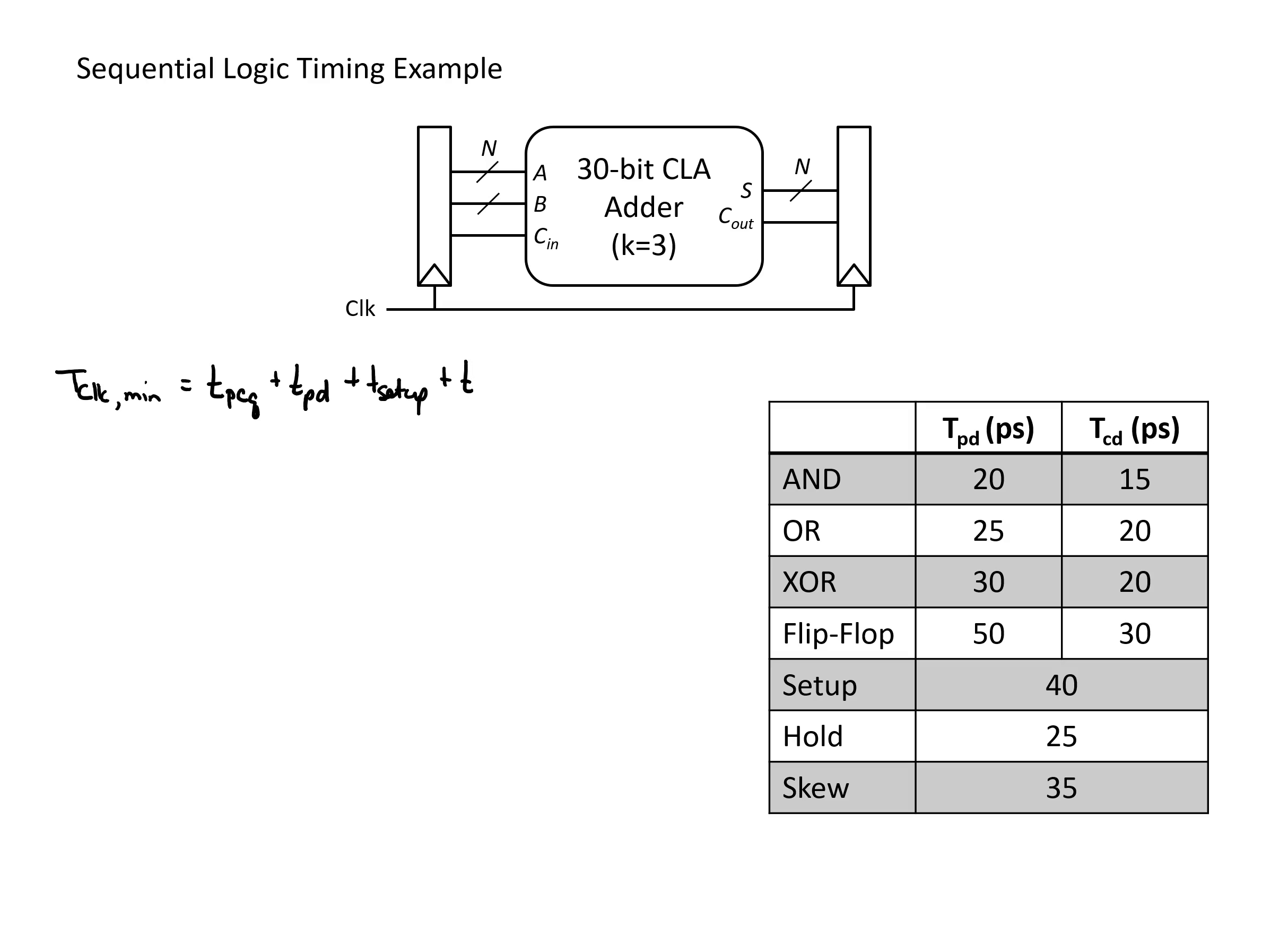Finally we need to account for any skew or any differences between when the clocks arrive at the two banks of flip-flops. Three of these elements come directly from the specifications shown in the table to the right. The one that we have to determine in more detail is the propagation delay of the combinational logic.